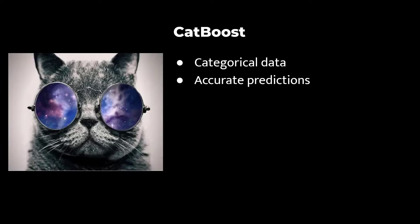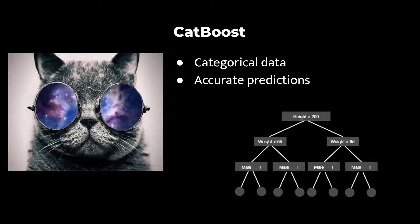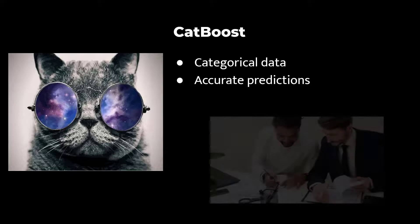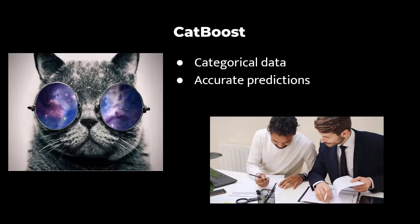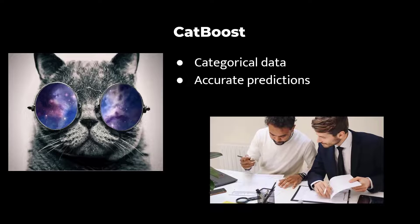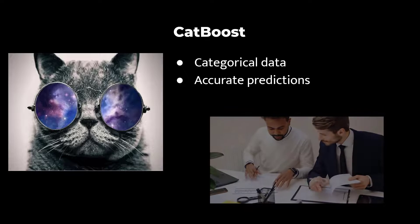CatBoost is a machine learning library specifically designed to handle categorical data efficiently. In trading, this means it's excellent for analyzing different types of assets or trading pairs. And its strength lies in accurately predicting market movements and making informed decisions in markets with varied asset categories. You can think of CatBoost as an intelligent trading companion helping you to navigate the complexity of Forex and cryptocurrency markets.